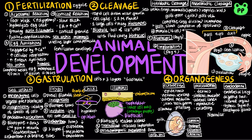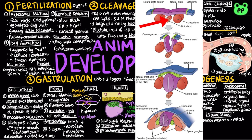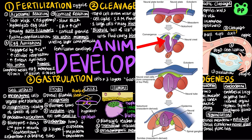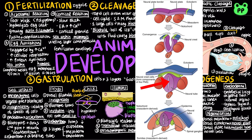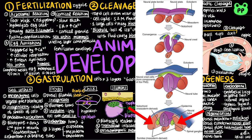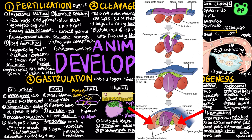Neurulation refers to the folding process in vertebrate embryos, in which the dorsal mesoderm develops into the notochord, the dorsal ectoderm develops into the neural plate, and the neural plate curves inward to form the neural tube, which will become the central nervous system including the brain and spinal cord. Neural crest cells develop along the neural tube and form various parts of the embryo including nerves and teeth. Mesoderm lateral to the notochord forms blocks called somites, which will develop into the vertebrae, muscles, and bones.